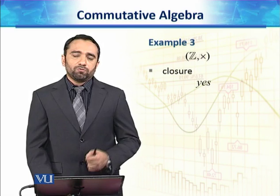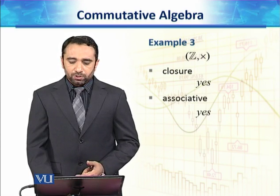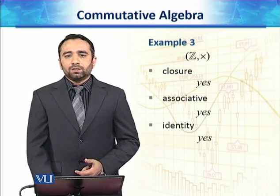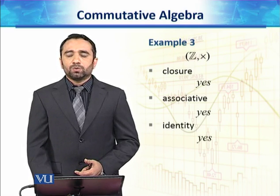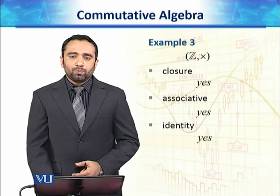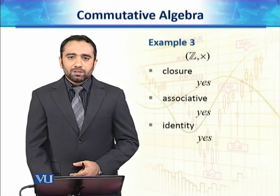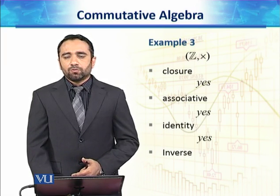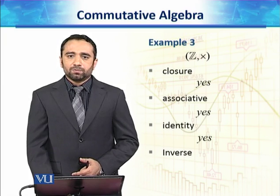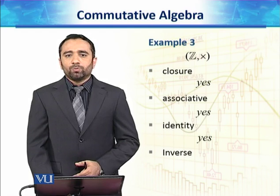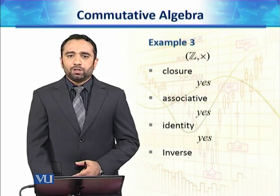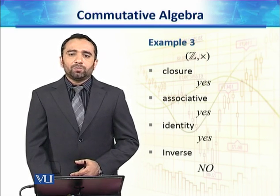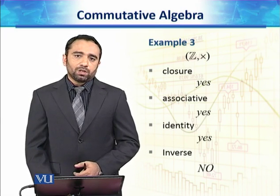What about Z under multiplication? Closure holds — multiplying two integers gives an integer. Associativity also holds. The multiplicative identity in Z is 1, which belongs to Z. However, not every element has a multiplicative inverse in Z: for example, 1 has its inverse, but 2, 3, or 4 do not have multiplicative inverses in Z. Therefore, Z is not a group under multiplication.